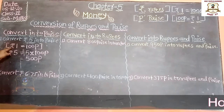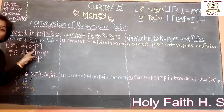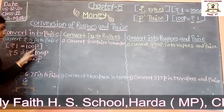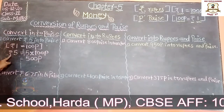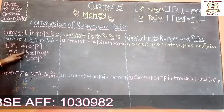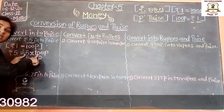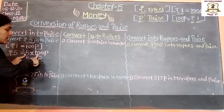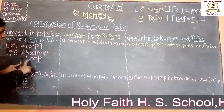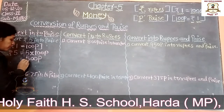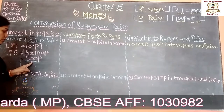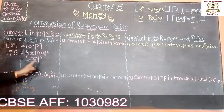Rupees 1 is equal to 100 paise. So rupees 5 is equal to 5 into 100 paise, which is equal to 500 paise. So we get the answer 500 paise.